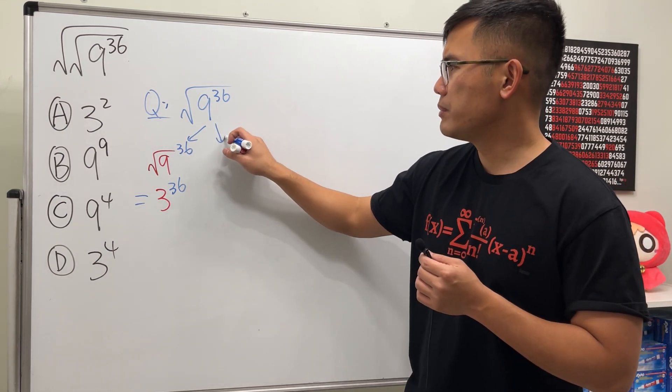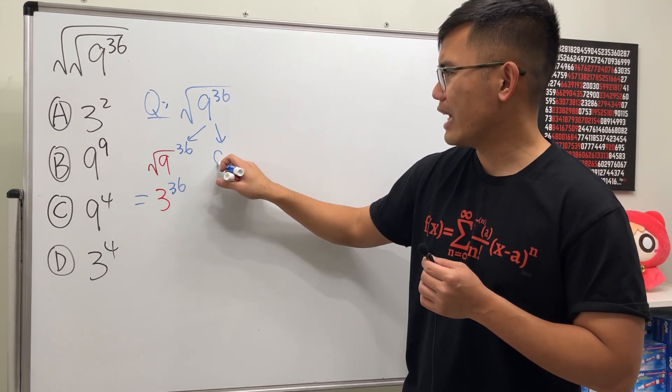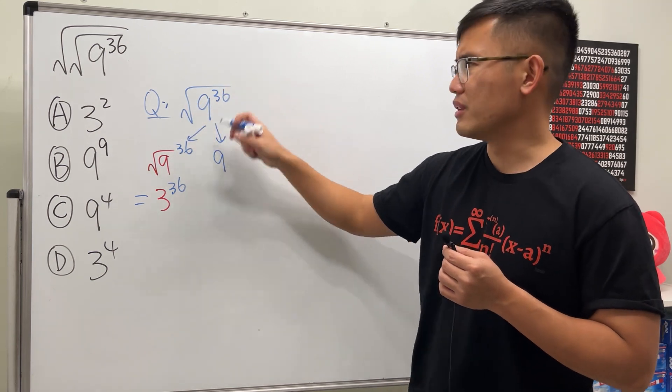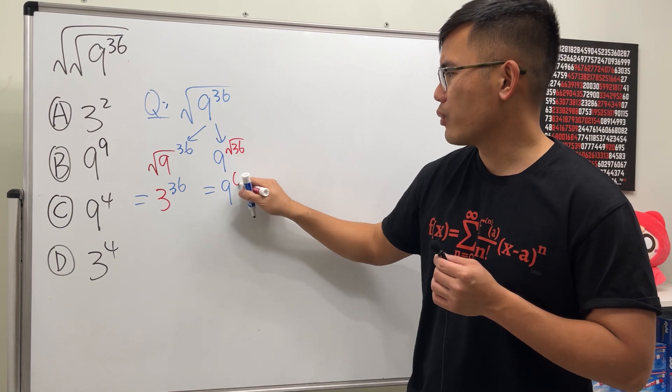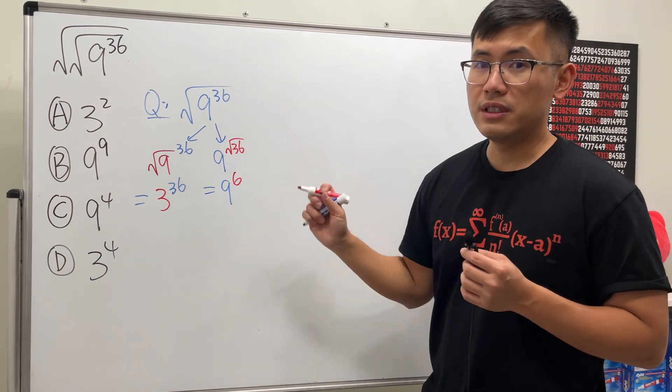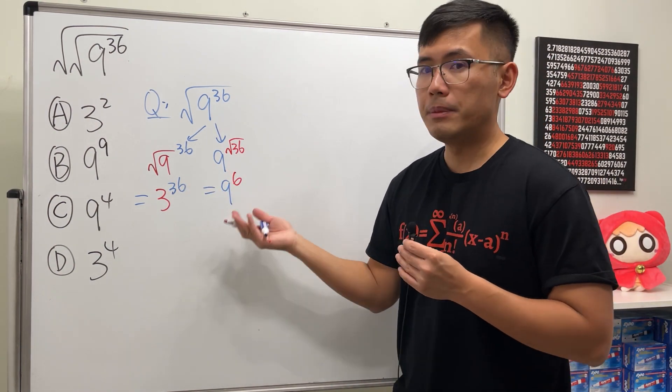Or should we just keep the base as 9 and then do the square root of 36? In that case we get 9 to the 6th power. So what do you guys think, which one is correct? Well, maybe both, or maybe neither?